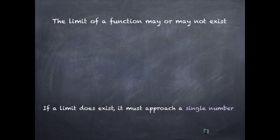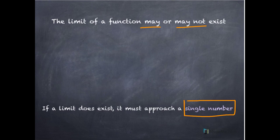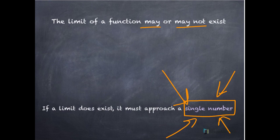A couple of facts about limits. Fact 1: a limit may exist or it may not exist. Fact 2: if a limit does exist, that limit must approach a single number. For a limit to exist, it must approach a single number — this is very important.